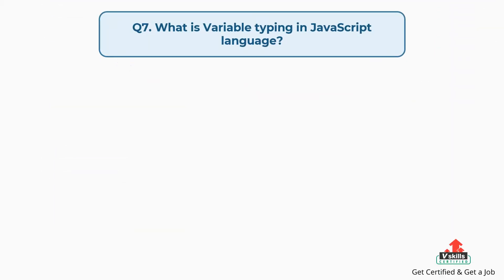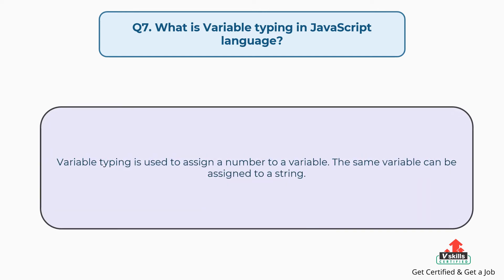Question number seven: what is variable typing in JavaScript? Variable typing is used to assign a number to a variable, and the same variable can also be assigned to a string.